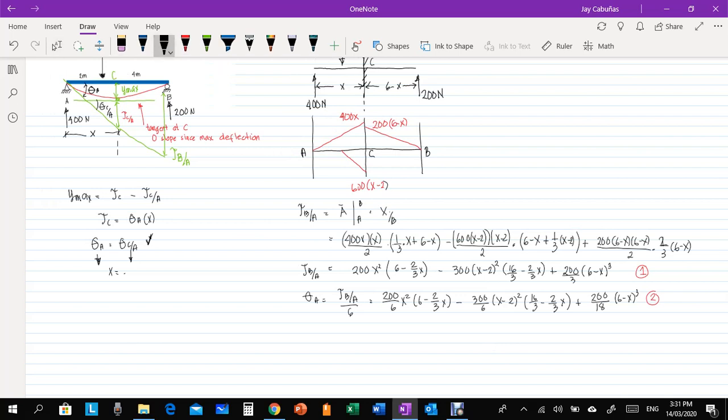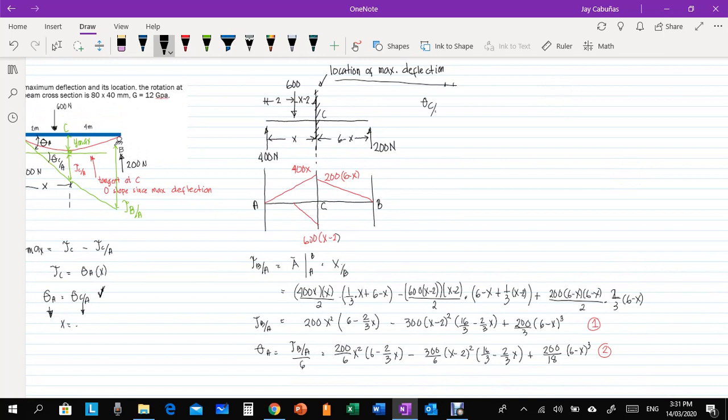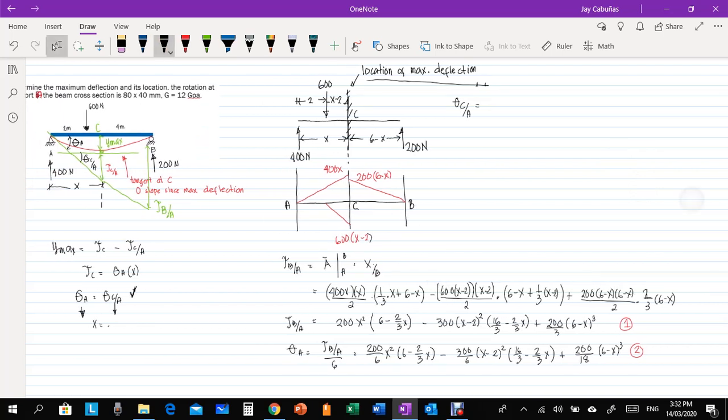So, next, we compute theta C over A. Okay, so, let's say that's theta C over A. Okay, so, theta C A, it is just the area, moment area from A to C. Again, for angle, we don't multiply the centroid, it is just purely the area. Okay, so, what's the area there, the area in between A and C. It is in between A and C, just the area alone, we have 1 half times 400 X times X, next is minus, minus 1 half of 600 X minus 2 times X minus 2. Okay, so,